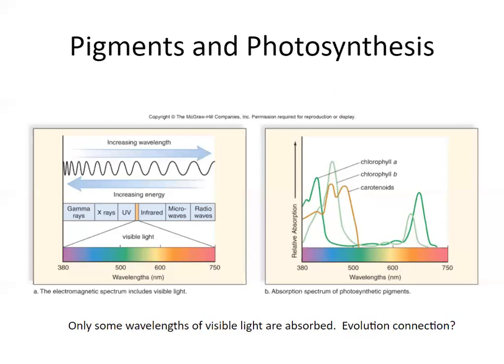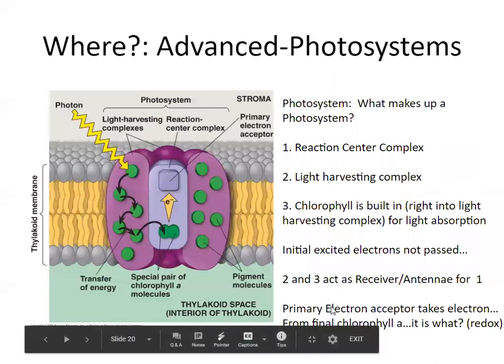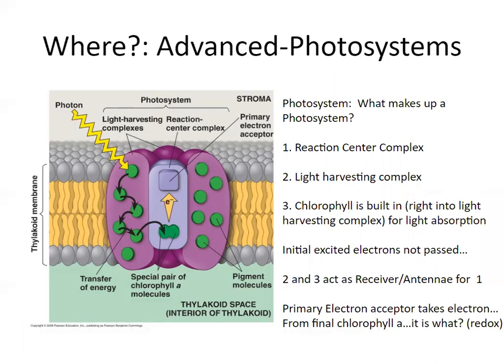Why is having secondary pigments an adaptation that increases fitness for autotrophs? If the primary pigment isn't available or can't function, the organism can still make food with another type of pigment — it's a backup mechanism for light absorption and photosynthesis. These secondary pigments absorb green and reflect other colors, so it wouldn't make sense to have backup pigments that also only reflect green. Their different absorption spectra means they capture light energy that chlorophyll would miss.